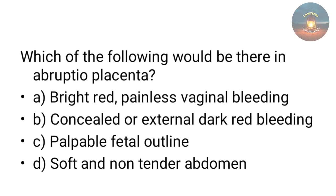Which of the following would be present in abruptio placenta — bright red painless vaginal bleeding, concealed or external dark red bleeding, palpable fetal outline, or soft non-tender abdomen? The answer is concealed or external dark red bleeding. That is the characteristic feature of abruptio placenta. Bright red painless vaginal bleeding is characteristic of placenta previa.